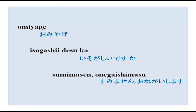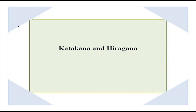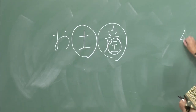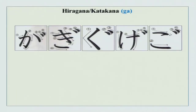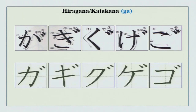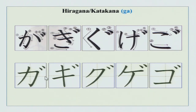We have completed the first set of 46 syllables for both scripts. Now we have the second set of 25 in each, and the first is the ga-series for both katakana and hiragana: ga, gi, gu, ge, go. You will remember that ka, ki, ku, ke, ko gets a small attachment on top to change to the ga-series. Note the stroke order and try doing it on a graph sheet — you will get it very proportionately.